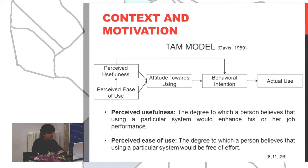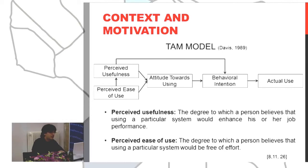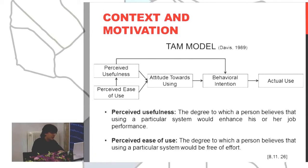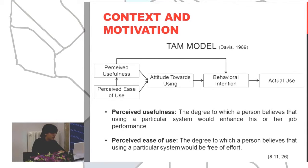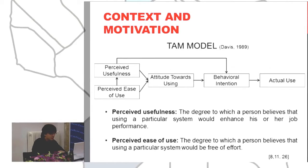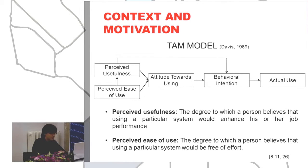The Technology Acceptance Model proposed by Davis is a theoretical proposal based on the Theory of Reasoned Action and the Theory of Planned Behavior by Fishbein and Ajzen, which tries to analyze and predict the actual use of a technology. It is based on two main concepts: the perceived usefulness, which is the degree to which a person believes a particular system would enhance their performance, and the perceived ease of use, which is the degree to which a person believes that using a particular system would be free of effort.